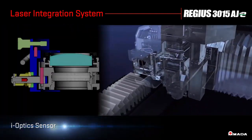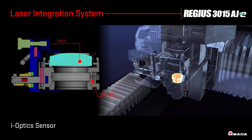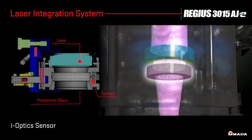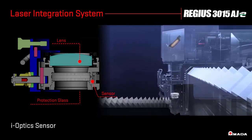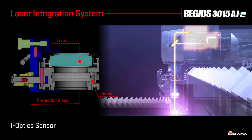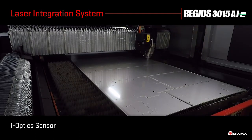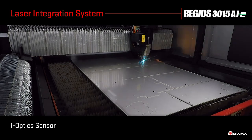The iOptic sensor detects debris on the protection glass to help reduce processing defects. With the condition of the protection glass continuously monitored by the sensor installed inside the laser head, the Regis can run for longer durations without the need for manual inspection.